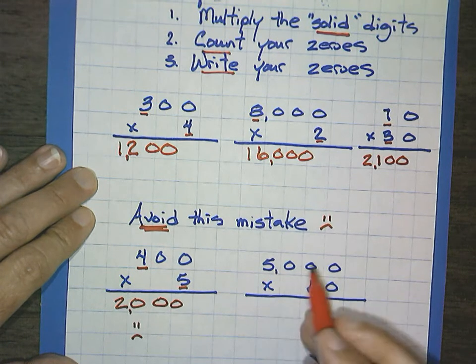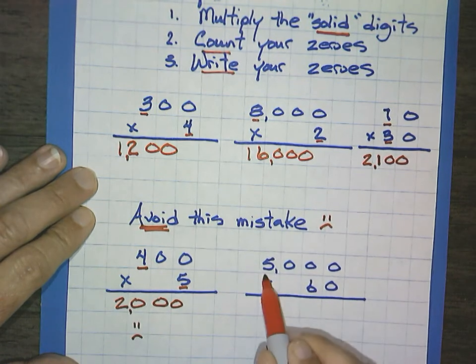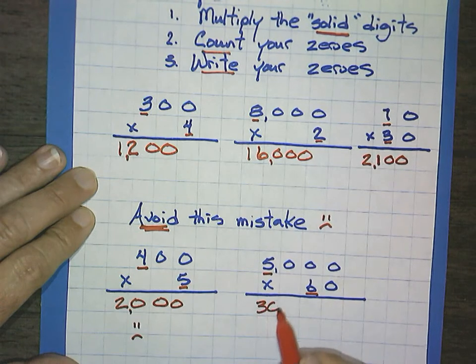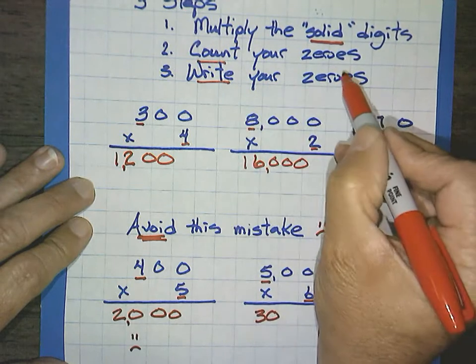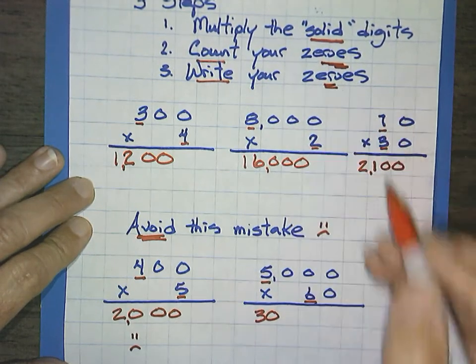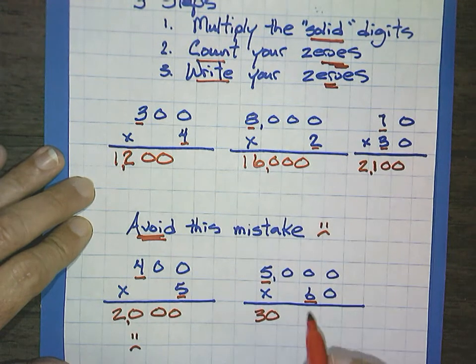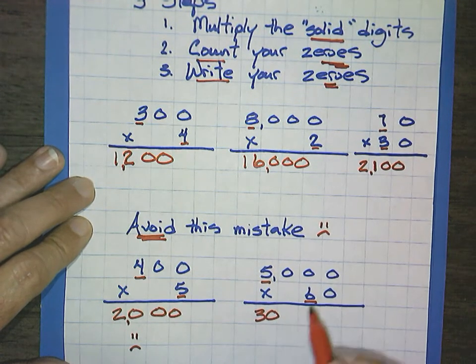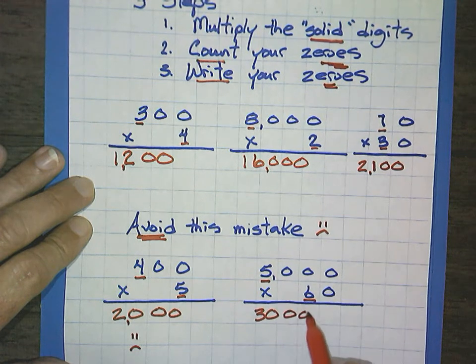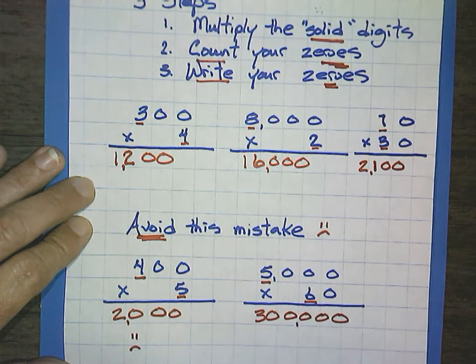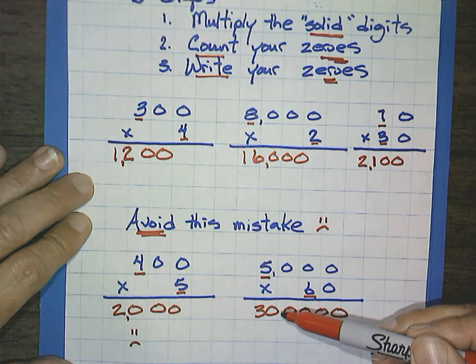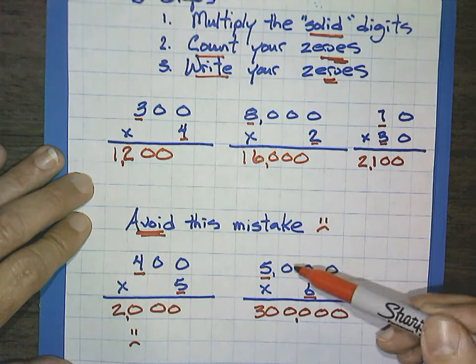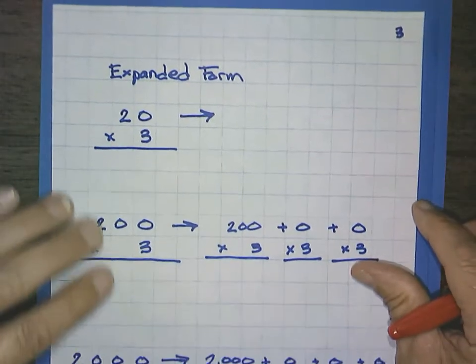Here's another example. Our solid numbers, 5,000 times 60 would be 5 times 6 is 30. Notice that you have a zero. You still have to count and write all of your zeros. So ready? 1, 2, 3, 4. Ready? There's one there already. It doesn't matter. 1, 2, 3, 4. And put in your separator for your answer. So avoid the mistake that when you multiply, sometimes you have an answer that has a zero. You still have to count and write your zeros.